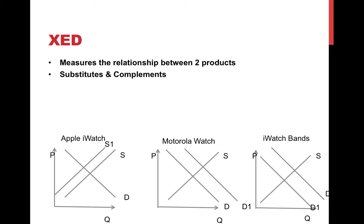We've got an example below. We've got the Apple iWatch, and we can see that supply shifted to the left, causing a change in price and quantity. If the Apple iWatch goes up in price, the Motorola watch will probably go up in demand, as consumers would prefer to buy the cheaper alternative in place of the Apple Watch — they are substitutes. iWatch bands are clearly complements; when you buy an Apple Watch, you probably want to buy bands with it, so if the price of the iWatch goes up, demand for iWatch bands drops.